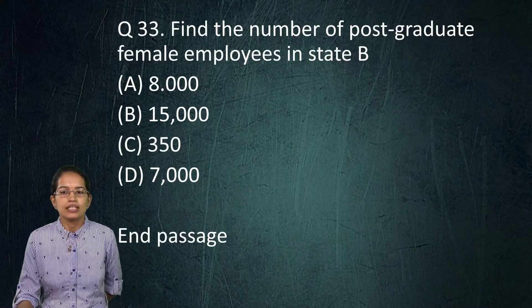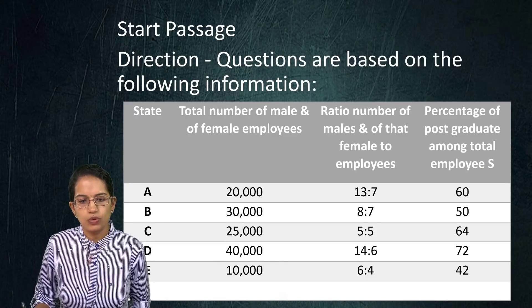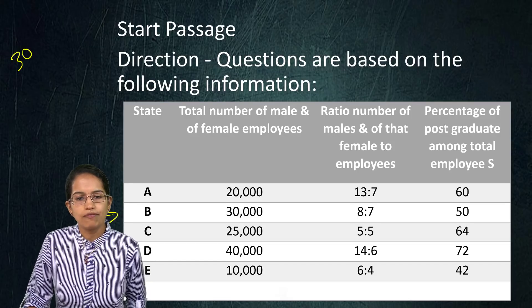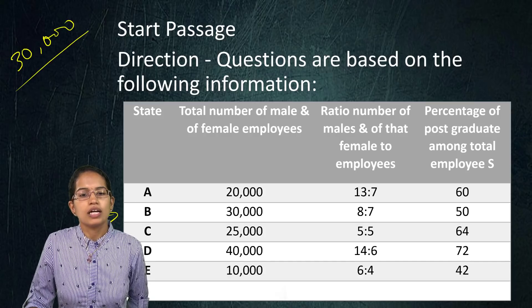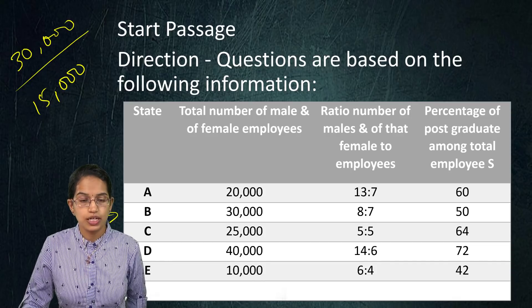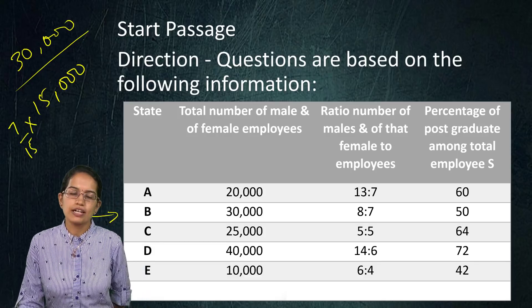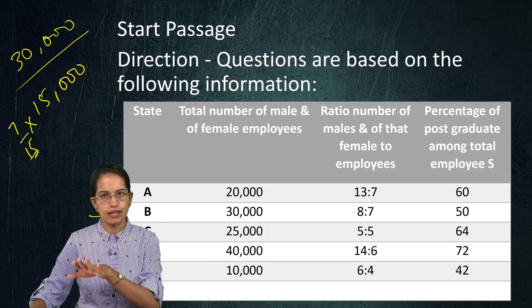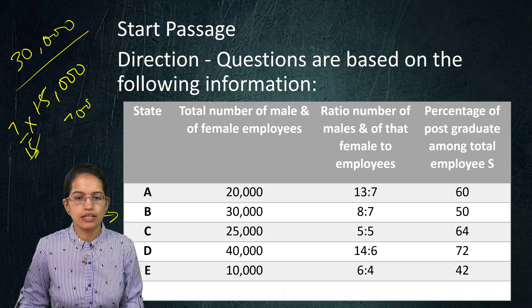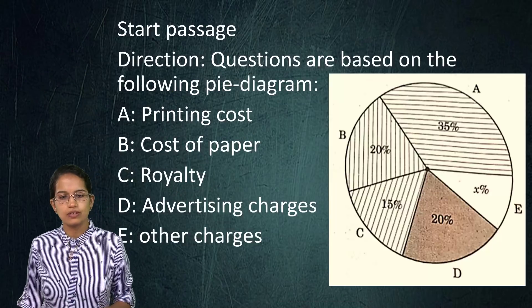Next, find the number of postgraduate females in state B. State B has 30,000 total employees; 50% are postgraduate, giving 15,000. The male-to-female ratio is 8:7, so female postgraduates = (7 ÷ 15) × 15,000 = 7,000. So 7,000 is the right answer.